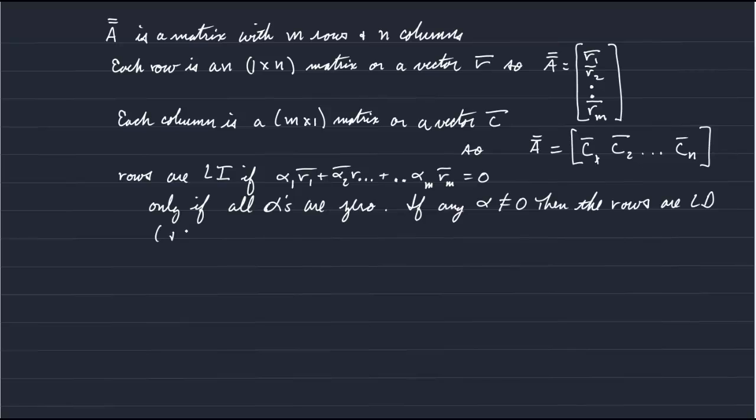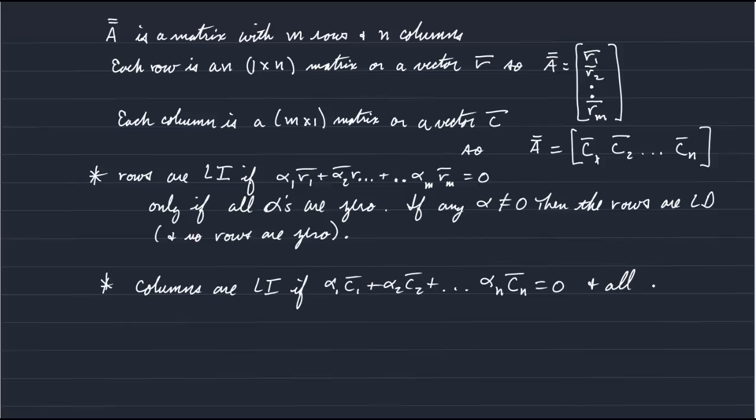And that is no rows are 0 rows. Likewise, the columns are linearly independent if alpha 1 C1 plus alpha 2 C2 plus all the way out to alpha N CN is equal to 0 and all alphas are 0.